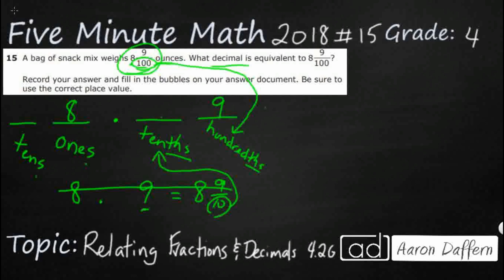So we've got eight point nothing nine. This is eight and nine hundredths. The only thing I'm really missing—there's my eight, there's my nine, and it's sitting in the hundredths spot. I've got this blank on the tenths.